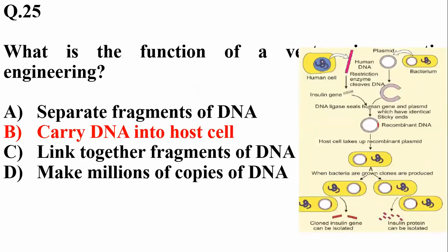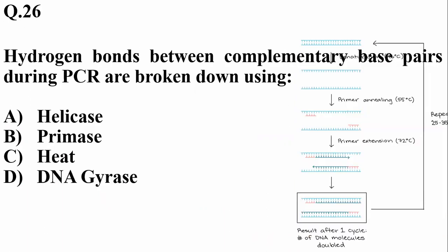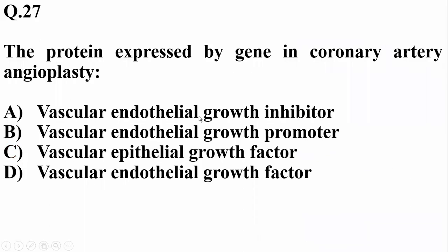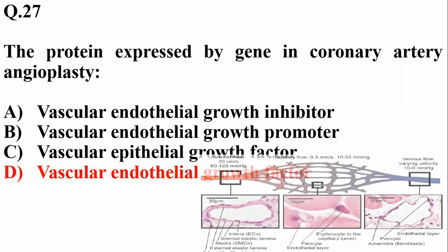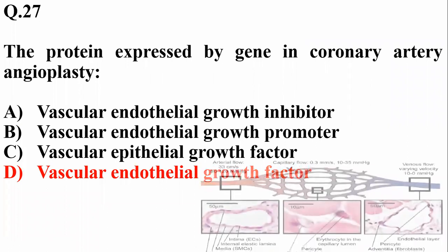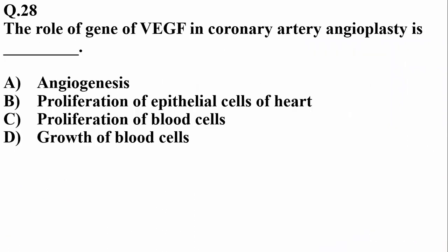Hydrogen bonds between complementary base pairs during PCR are broken down by using heat, so Charlie. The protein expressed by the gene in coronary artery angioplasty is vascular endothelial growth factor, so delta is the right option. The role of vascular endothelial growth factor in coronary artery angioplasty is the proliferation of endothelial cells — not epithelial cells — so alpha is the right option for angiogenesis.